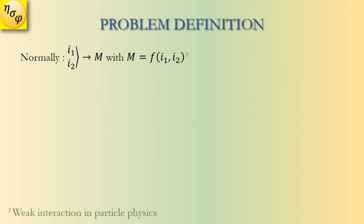In weak interaction in particle physics, there is a range of phenomena that can be explained generally using this diagram. There are two inputs i1 and i2, and the physical process results in a number m, so m is a function of i1 and i2. But this doesn't work for the inputs d-minus, u-plus, and s-minus.